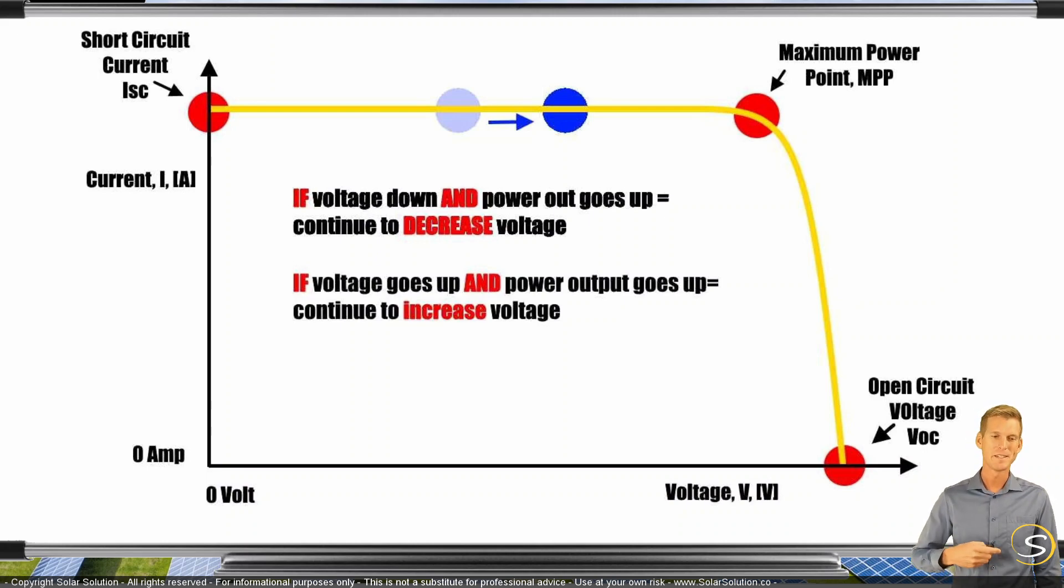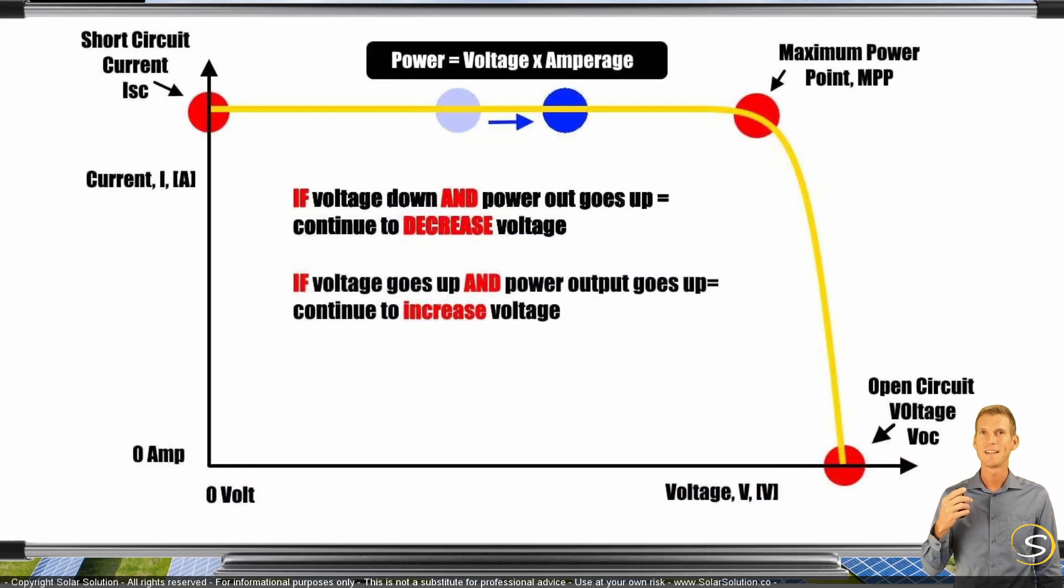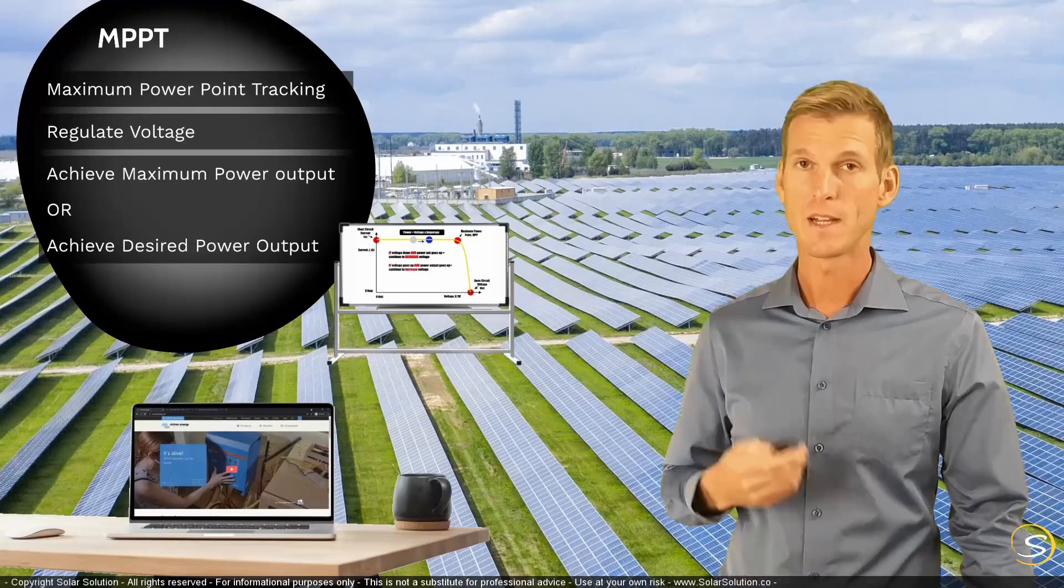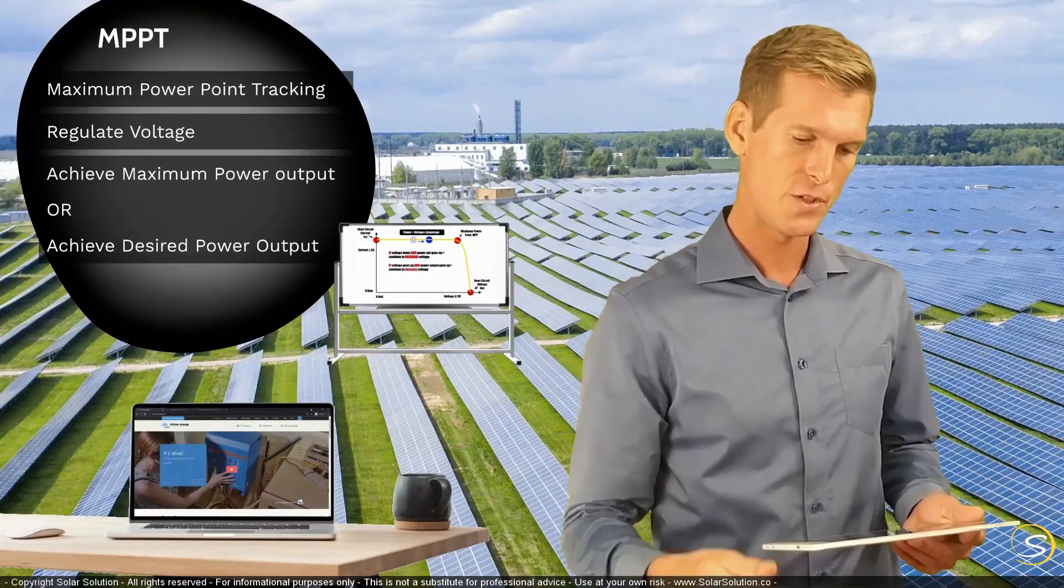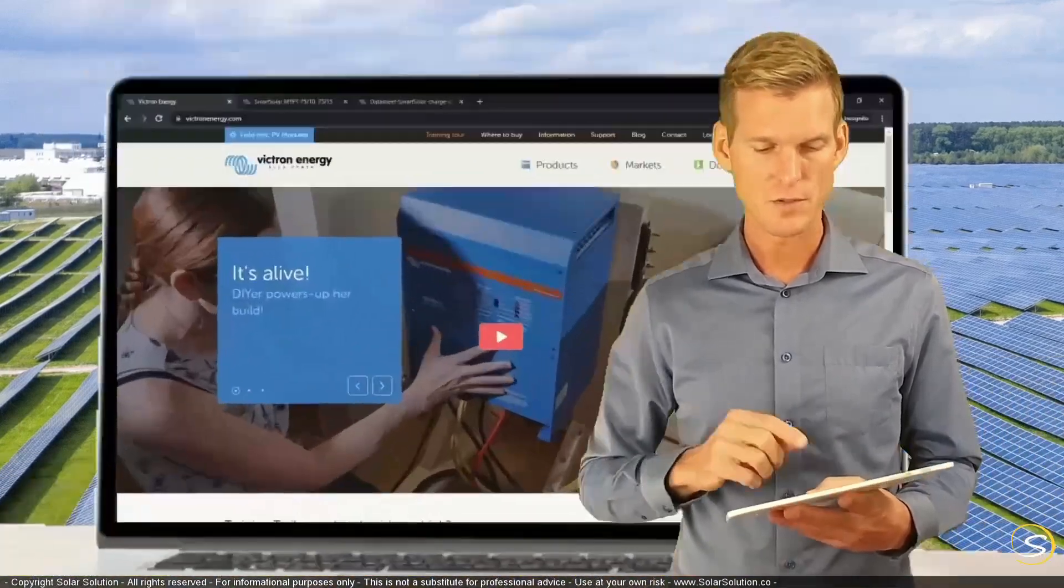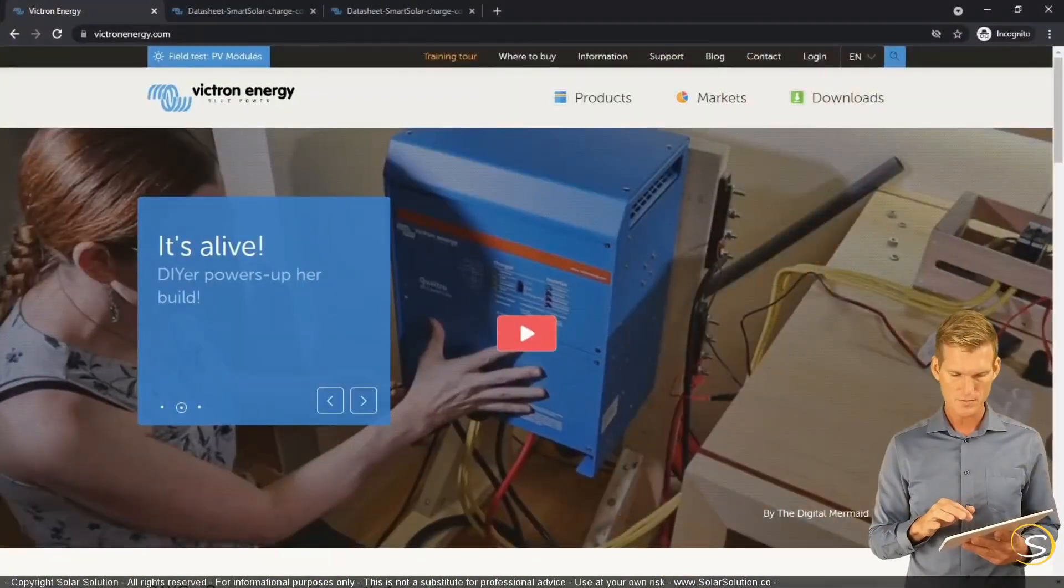Now, that's a lot of words, theory and graphs again. Let's look at a practical example. So I want to go to the website of Victron Energy. I'm not affiliated. And I want to show you an example here of an MPPT solar charge controller. So here we are. We're on the website.